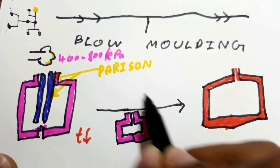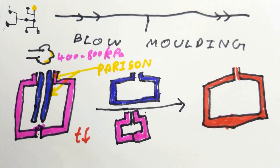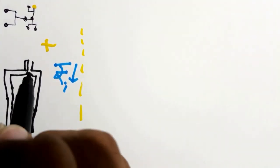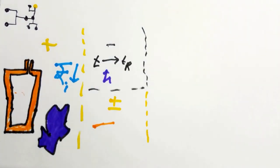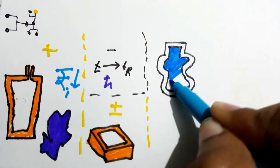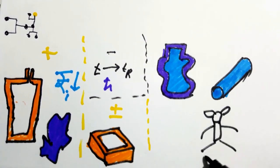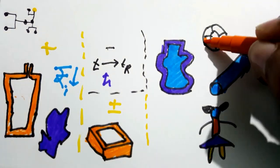As the formed component cools, the mould is open and the part is removed. Advantages include low initial cost of moulds, high flexibility in production. Disadvantages are high cooling times. Blow moulding is used for making food packaging, water bottles, pipes, floats and doll bodies.